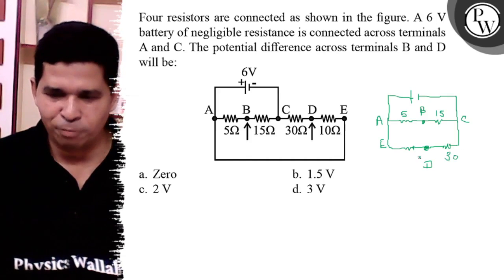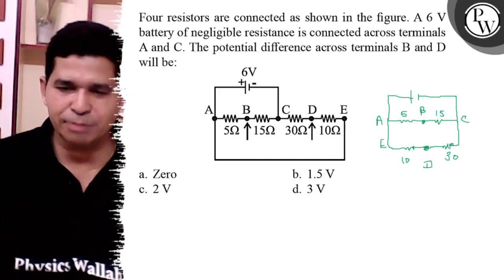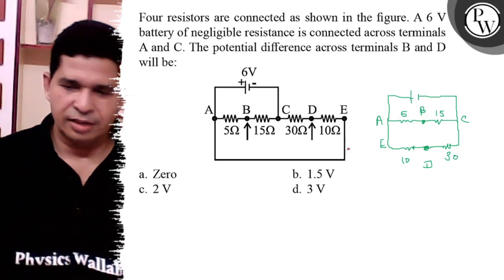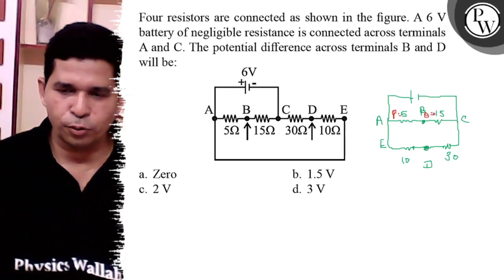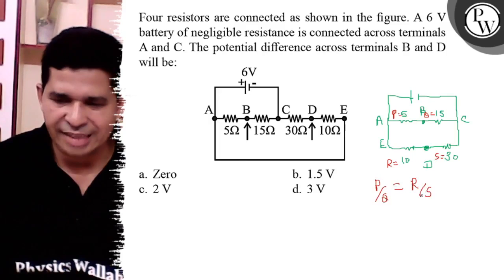Then it is 30 ohm, it is 10 ohm. What is the potential difference between B and D? This is a bridge circuit with resistances P, Q, R, and S, where P upon Q is equal to R upon S.